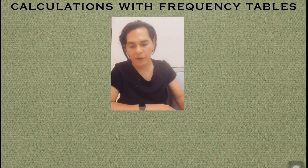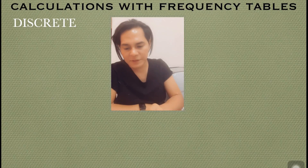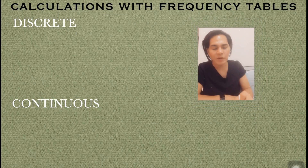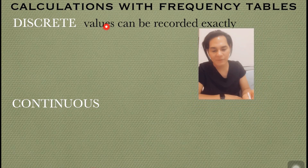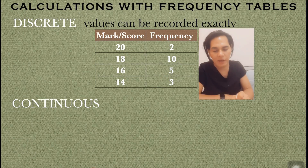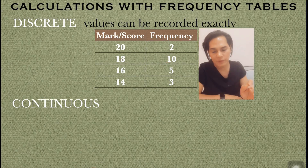To start with, I have two words here: discrete and continuous. When we say discrete, these are values that can be recorded exactly. For example, I have a table with 'mark' in the first column and 'frequency' in the other column, meaning there are two people who got 20, ten people who got 18, and so on. So that's the meaning for discrete — the values can be recorded exactly.